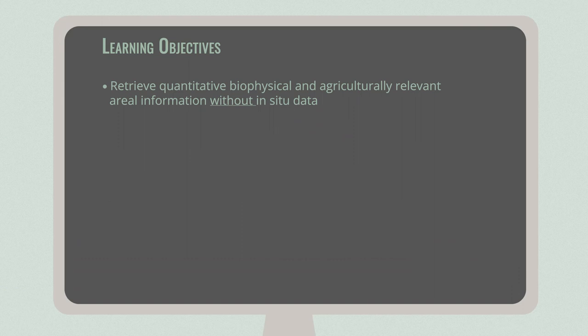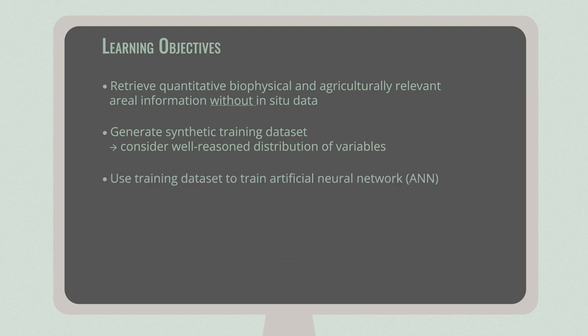To learn how to retrieve quantitative biophysical and agriculturally relevant aerial information from hyperspectral data, even without having in-situ data available. To do so, we first generate a synthetic training dataset. Of course, a well-reasoned distribution of the variables in the training dataset must be considered. The training dataset is then used within the vegetation processor tool to train an artificial neural network, or ANN for short.